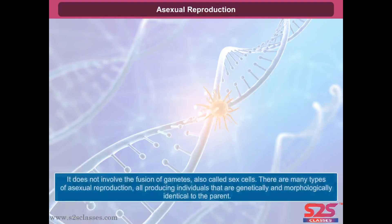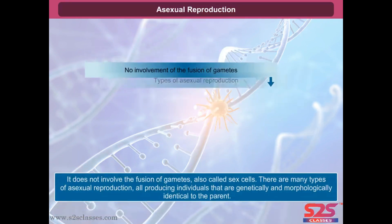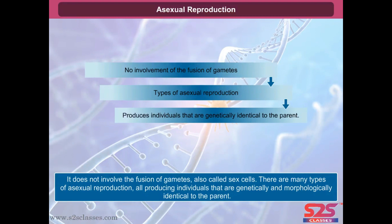Asexual reproduction does not involve the fusion of gametes, also called sex cells. There are many types of asexual reproduction, all producing individuals that are genetically and morphologically identical to the parent.